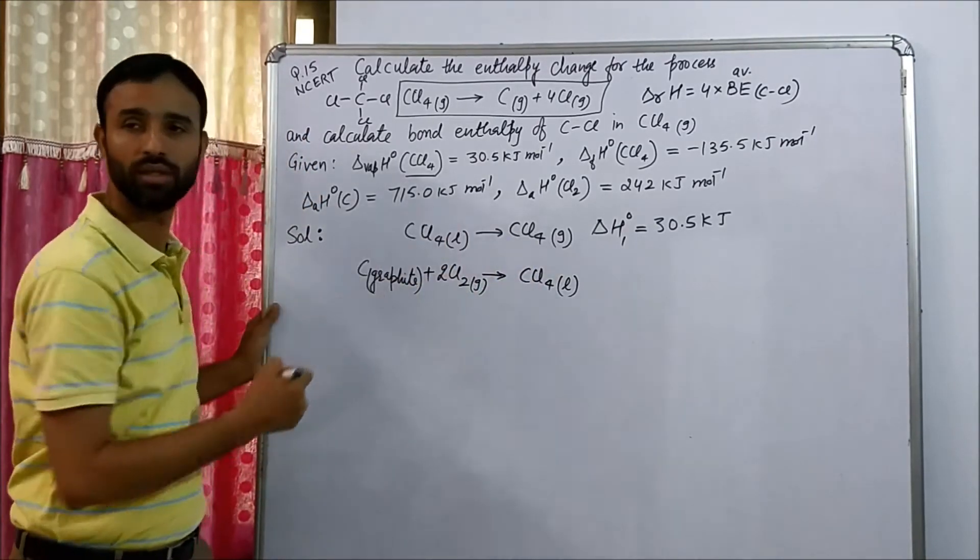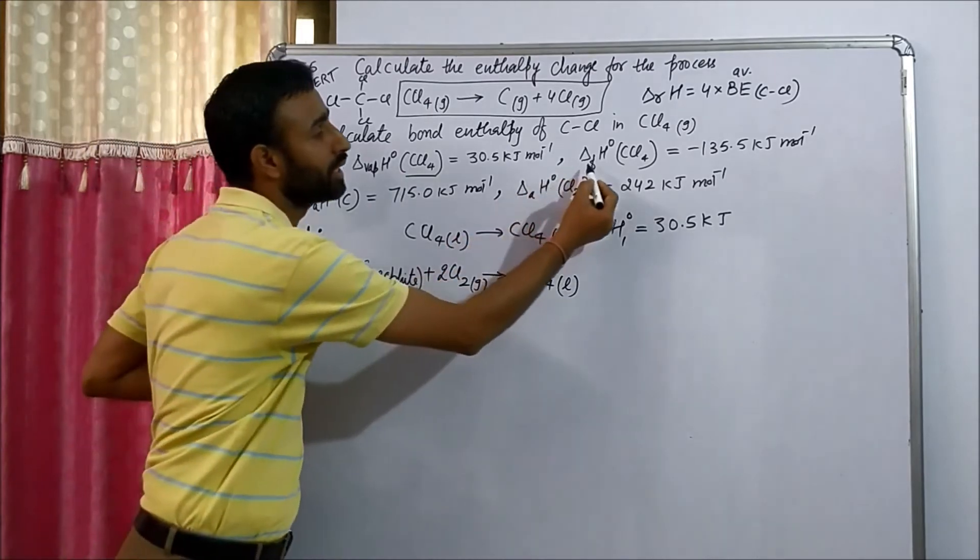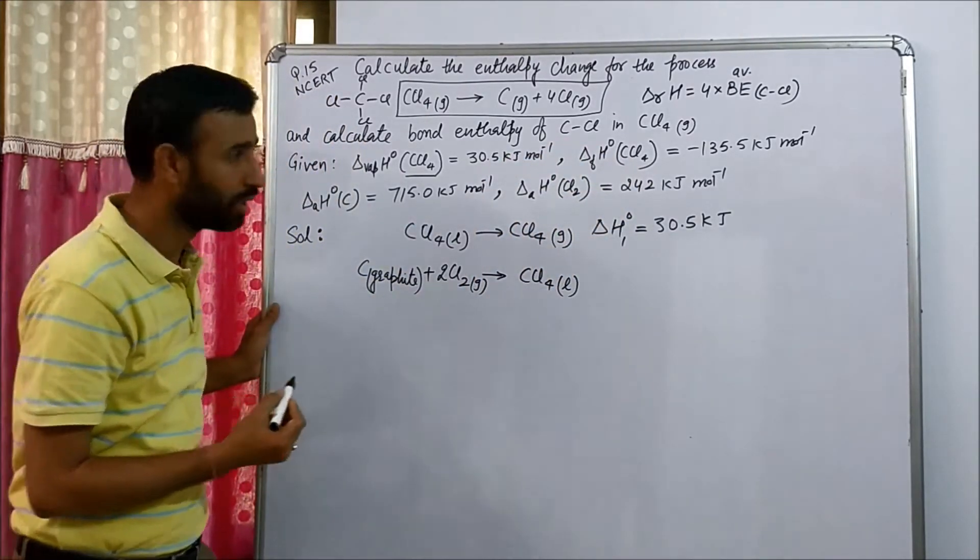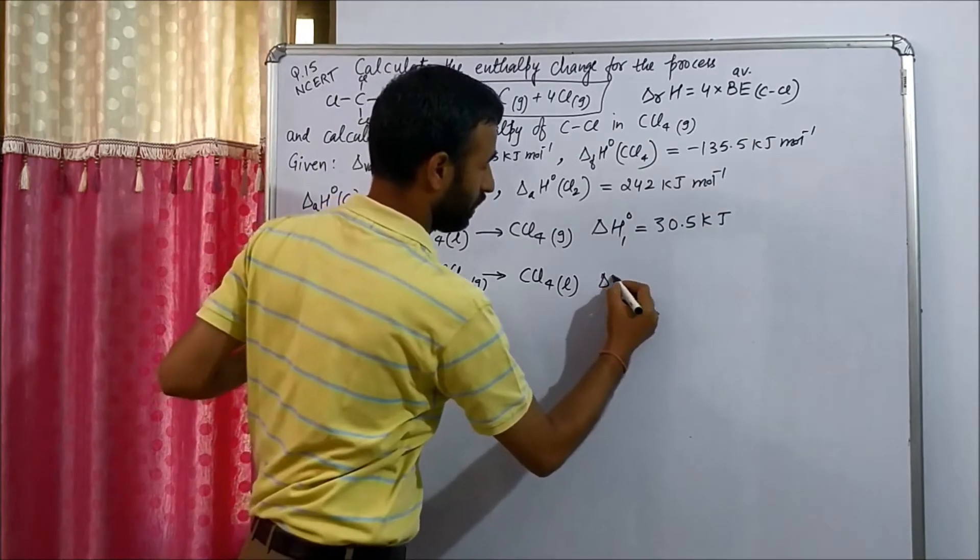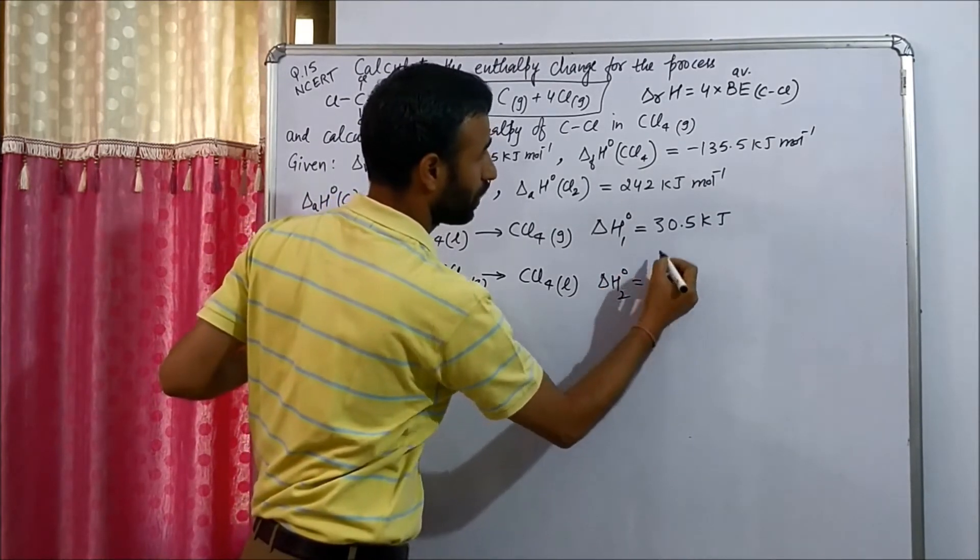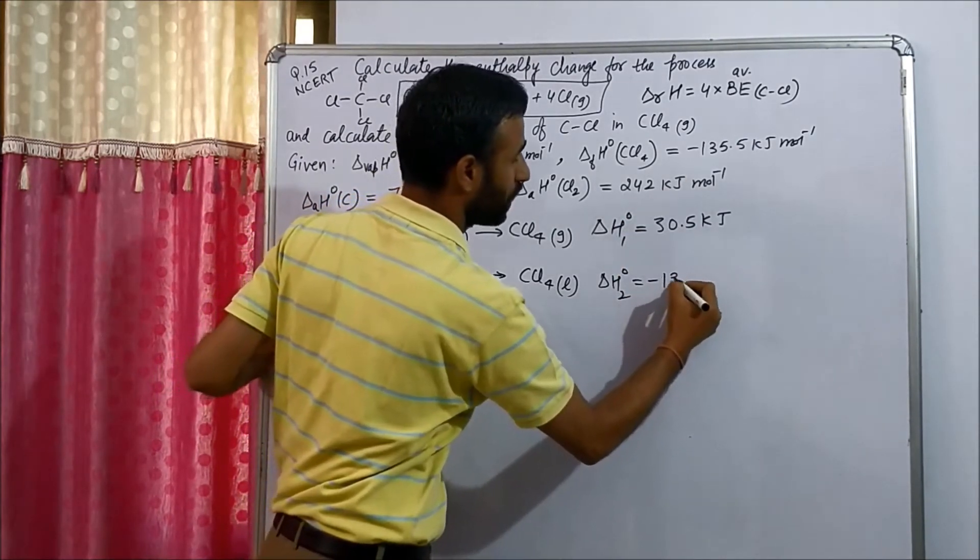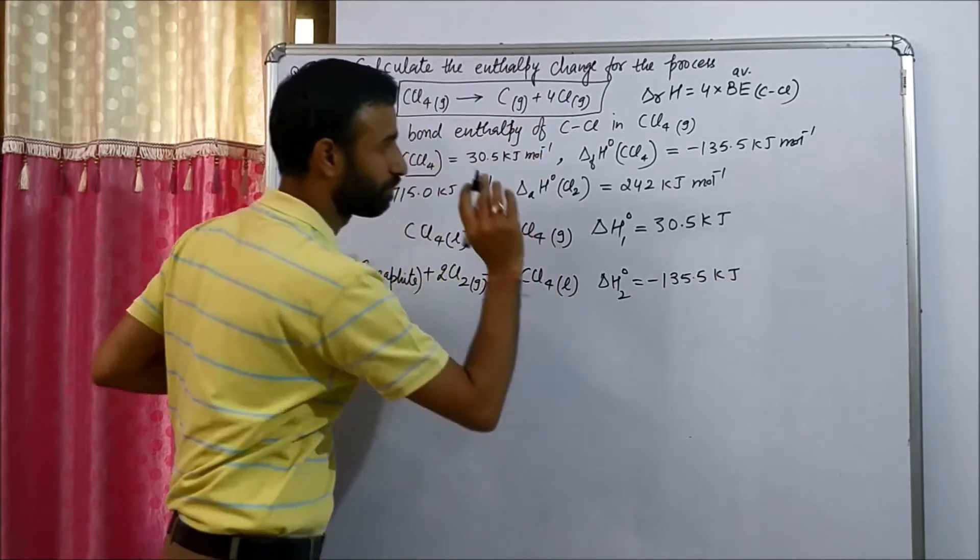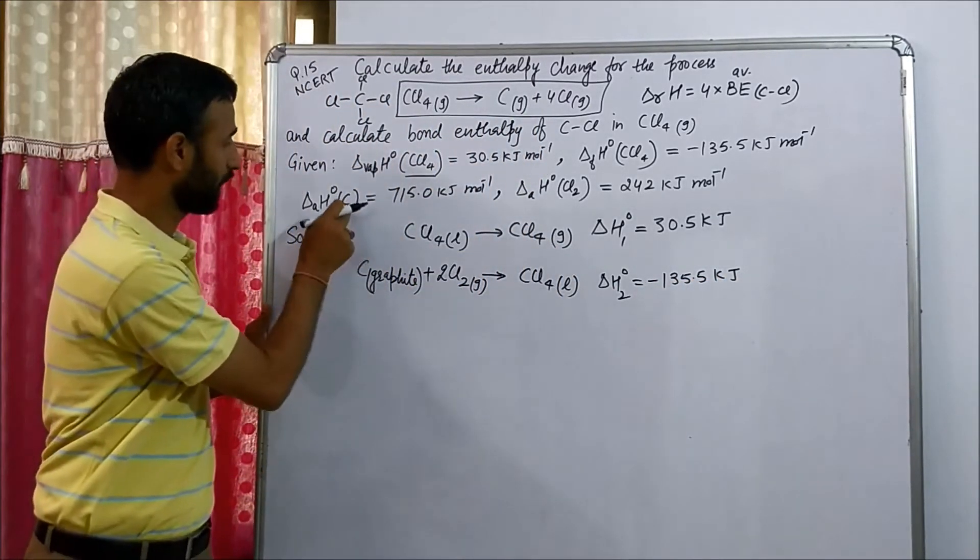So this is the equation for the enthalpy of formation of CCl4 and it is delta H2 and that is minus 135.5 kilojoules.